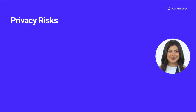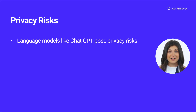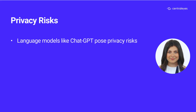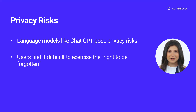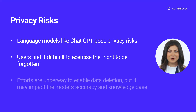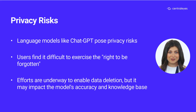Privacy risks associated with language models like ChatGPT are a major concern due to the model's use of any data it is fed, including personal information and social media content, without obtaining explicit permission from the owners. This lack of control over personal data raises challenges for users trying to exercise their right to be forgotten, since there is no practical way to remove their data from the model once it has been processed. The inability to delete personal information also raises concerns about data being used without consent, leading to privacy violations.